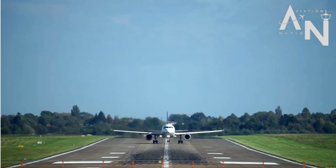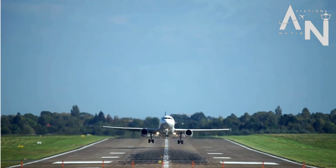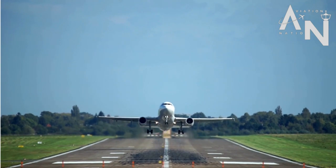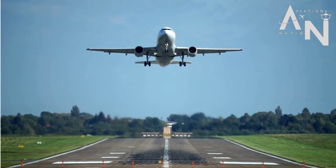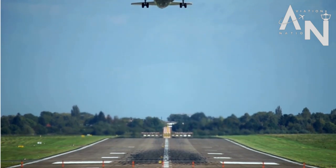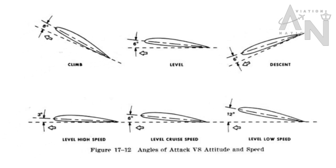There are several factors that influence the amount of lift generated by an airplane's wings. One of the most important is the angle of attack, which is the angle between the wing and the direction of the oncoming air. As the angle of attack increases, so does the amount of lift generated by the wing.